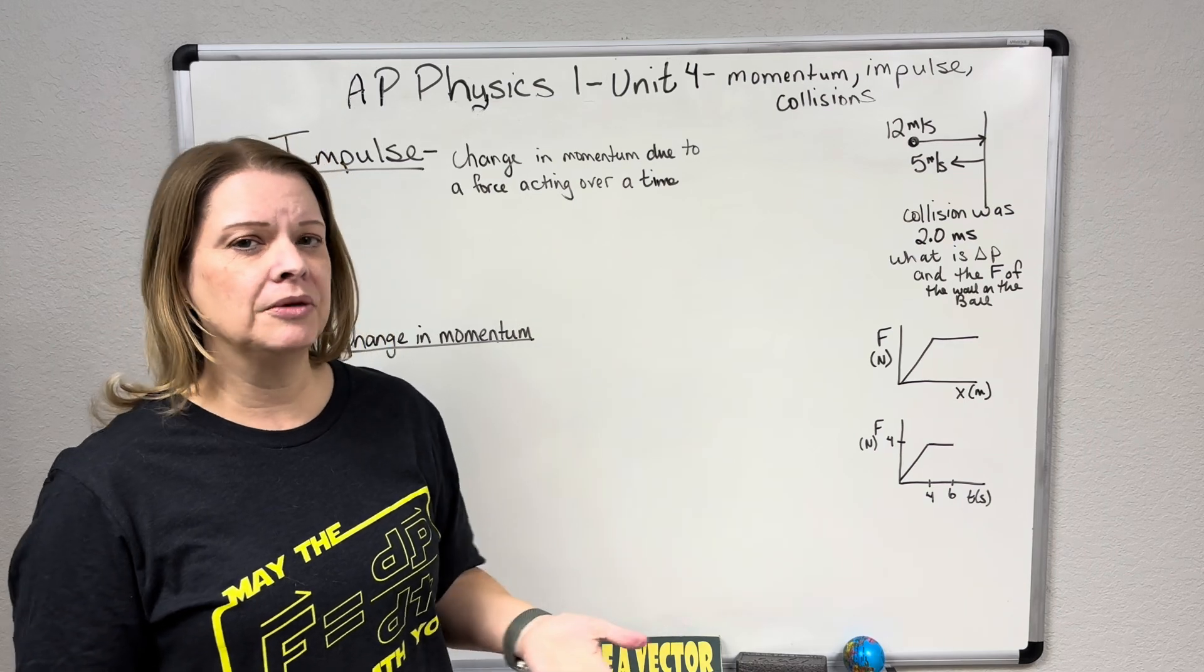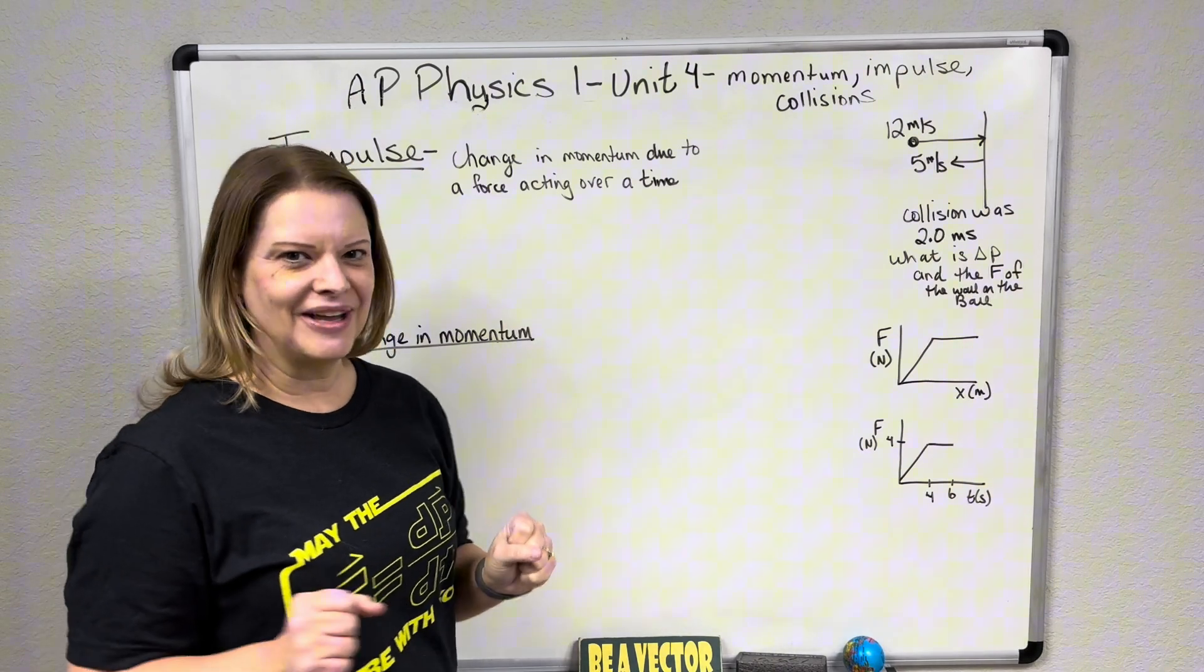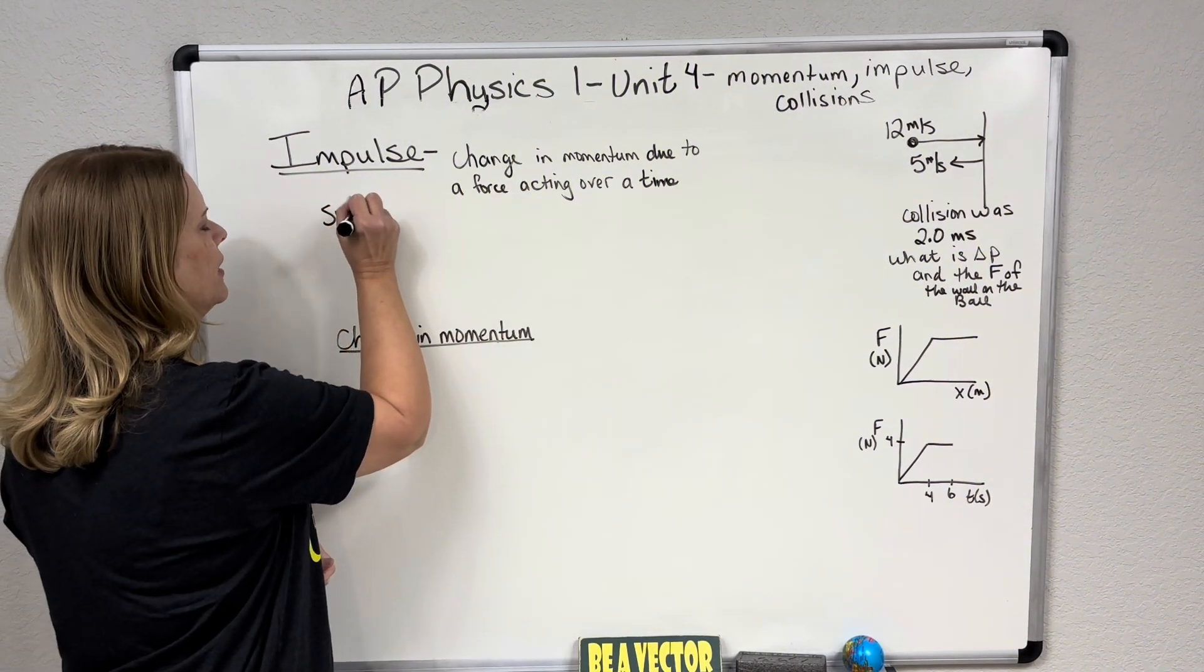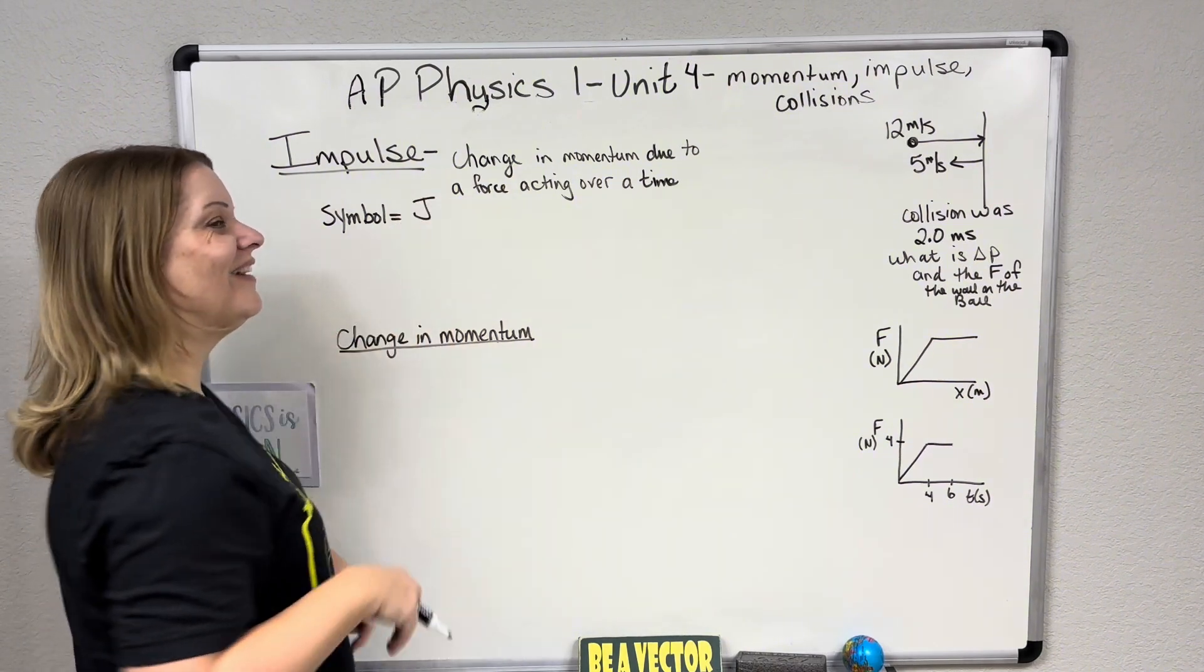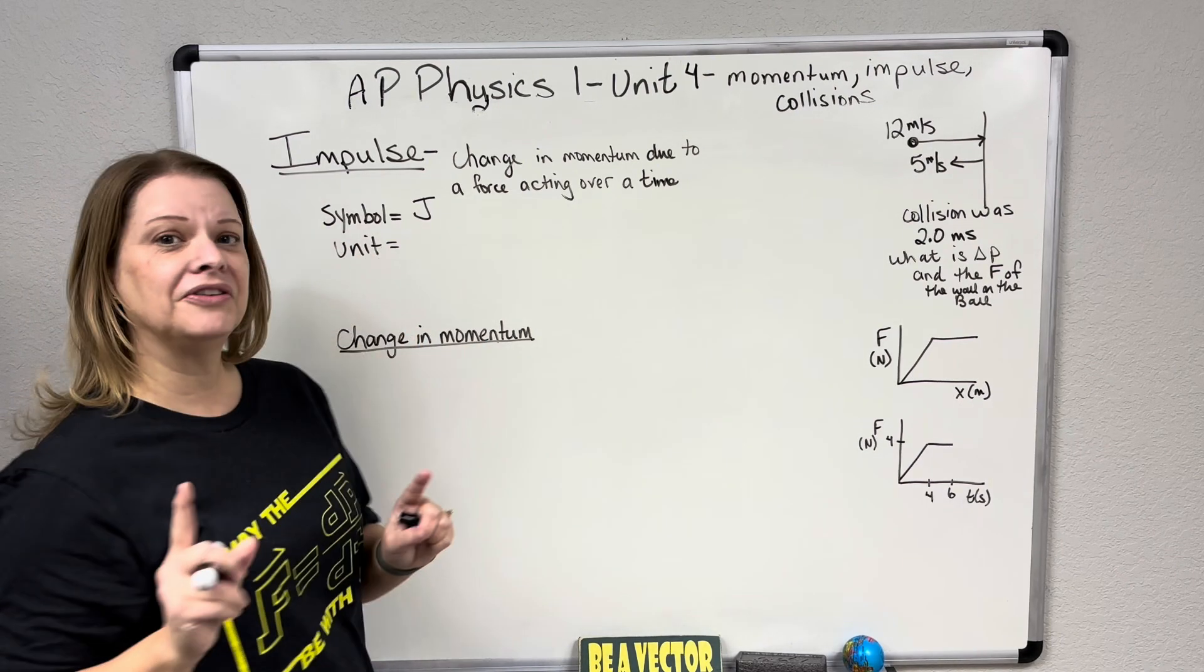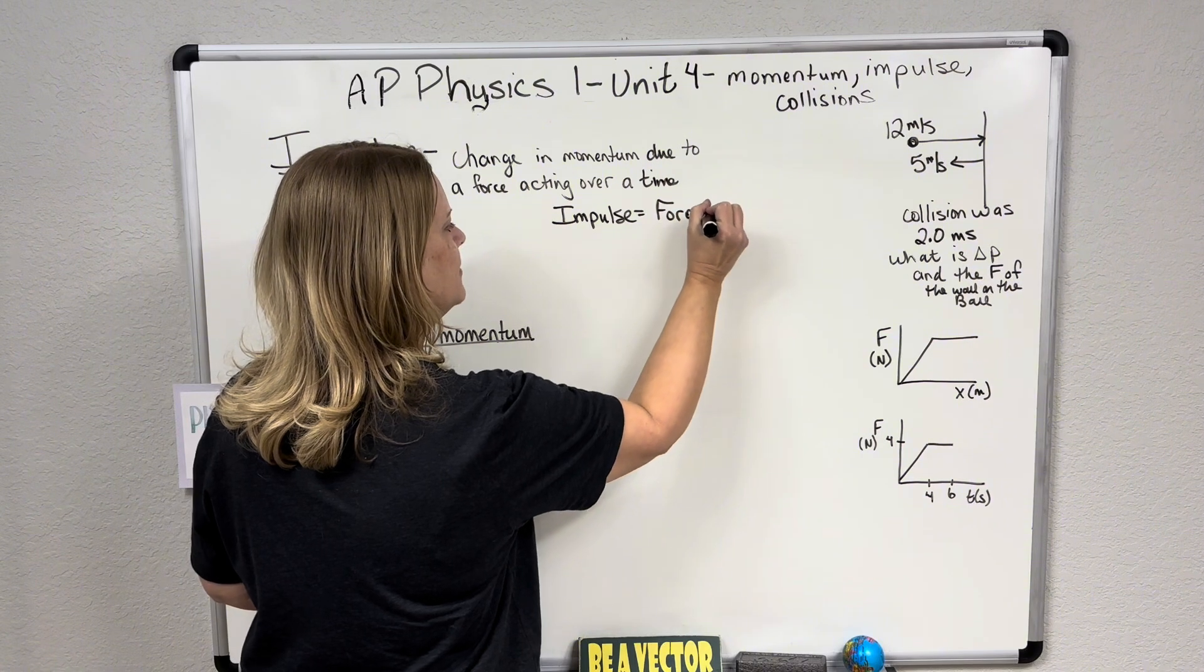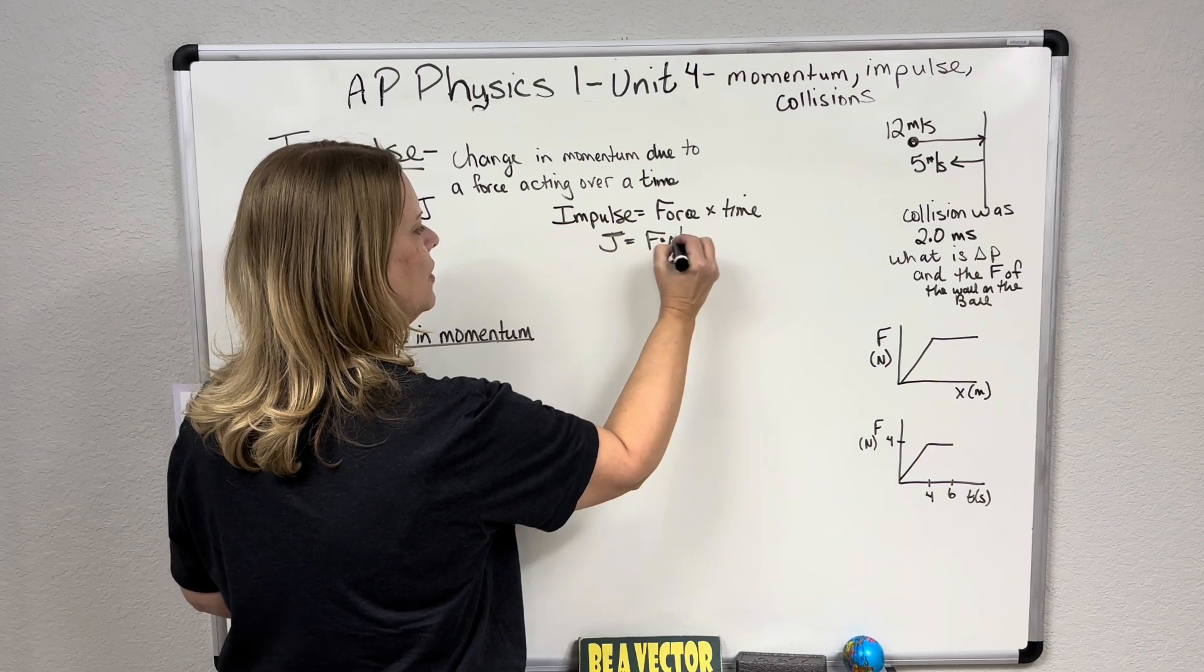Today we're going to talk about impulse and what impulse is. Impulse, it's not like that impulse to buy that we think about, like a Black Friday deal, that impulse. Not the kind of impulse we're talking about in physics. We're talking about a change in momentum due to a force acting over a time. The symbol for impulse is J. Sometimes you'll see impulse written out, but J is the symbol. Impulse is going to equal force times time. In symbols, J equals force times an interval of time.